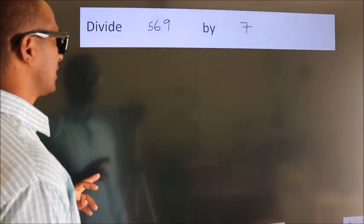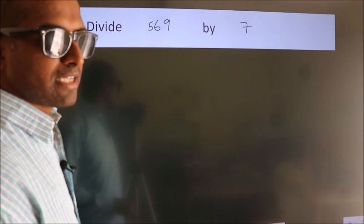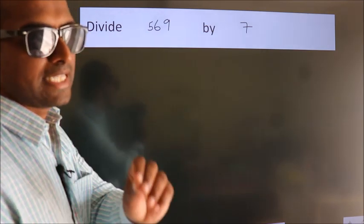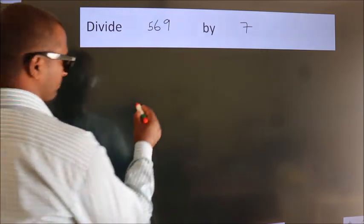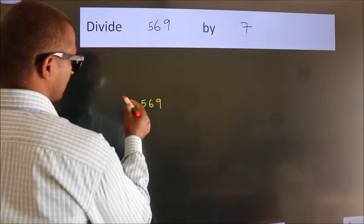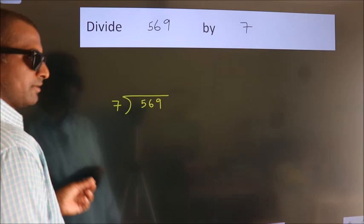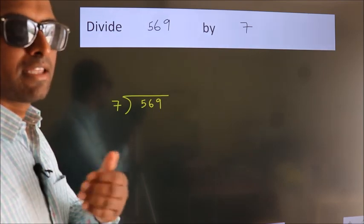Divide 569 by 7. To do this division, we should frame it in this way. 569 here, 7 here. This is your step 1. Next,